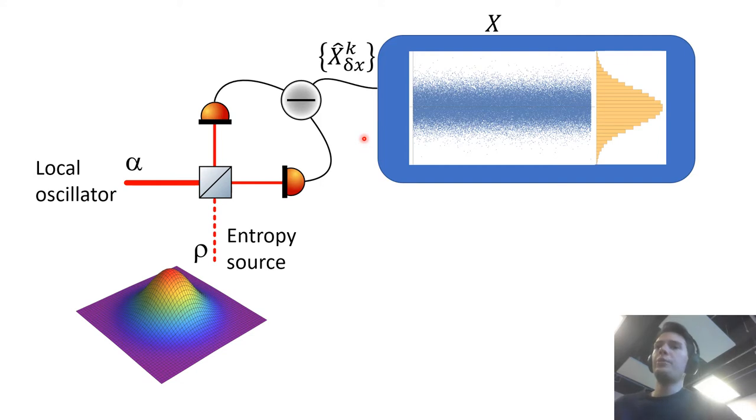Because you have finite precision you're measuring a POVM xk delta x where delta x is your precision on the quadrature measurement and so you will get some data like this, so random data points that have a given distribution dependent on the input state.